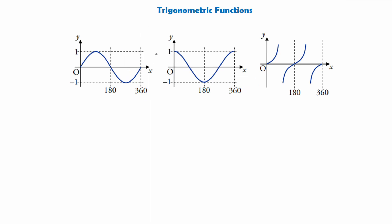We have looked at three trigonometric functions at National 5, and we're only going to look at the same three at Higher. At Advanced Higher you will look at more complex trigonometric functions, but at Higher these are the three main ones. We'll start with the one on the left — our function in this case is y equals sine x. The sine curve starts at zero, reaches a max value at one, goes back down to zero, then reaches a min value at minus one, before finishing back at zero at the end of its period. After this one wave, after this period, it will go back up and do the exact same thing again.